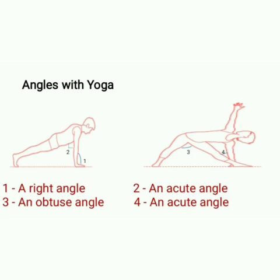Angles with yoga. You can see two yoga poses marked with four angles. Identify the angles marked 1, 2, 3, and 4. Angle 1 is a right angle. Angle 2 is an acute angle — the angle is less than 90 degrees. Angle 3 is an obtuse angle — the angle is more than 90 degrees and less than 180 degrees. And angle 4 is again an acute angle, which is less than 90 degrees.